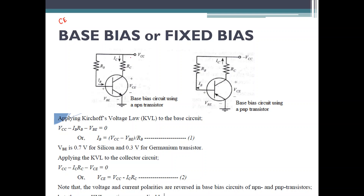When VCC is connected to the collector, a current will flow to the collector. The current going to the collector is called IC, and the current flowing to the base is called IB. If IC flows through RC to the collector, there will be a voltage drop across RC given by IC × RC. Similarly, when current flows through RB, a voltage drop of IB × RB happens across the resistor RB.